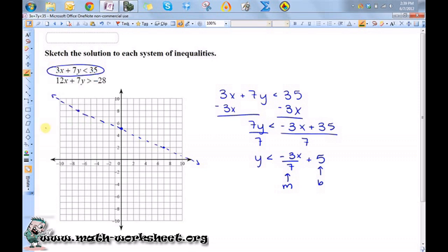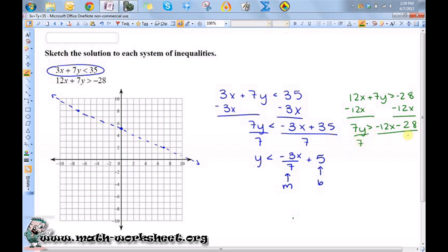So let's try the next one. 12x plus 7y is greater than negative 28. So I just need to subtract 12x from both sides. So I get 7y is greater than negative 12x minus 28. And then I need to divide both sides by 7 again. So y is greater than negative 12 over 7x minus 4. So this is my slope, and this is my y-intercept.